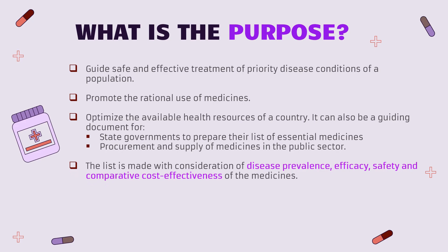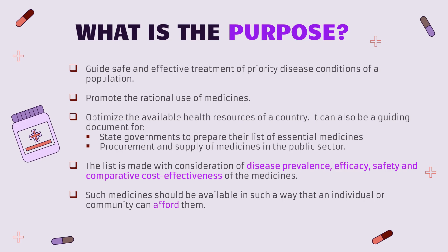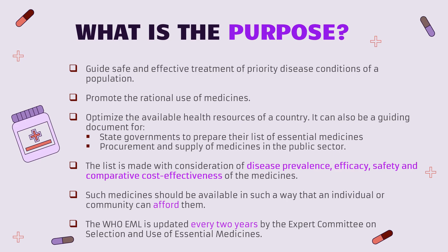This list is made with consideration of disease prevalence, efficacy, safety, and comparative cost-effectiveness of the medicine. Such medications should be available in such a way that the individual or community can afford it — not just a particular section of society, but the entire country. Regarding update frequency: for WHO, the list is updated every two years by an expert committee. Once that global list is published, each government customizes it based on its requirement and releases its own national list.